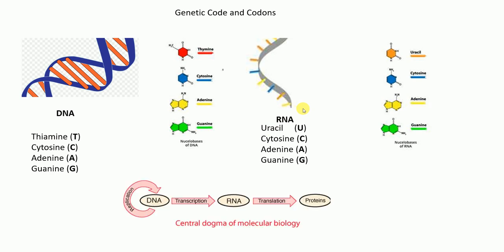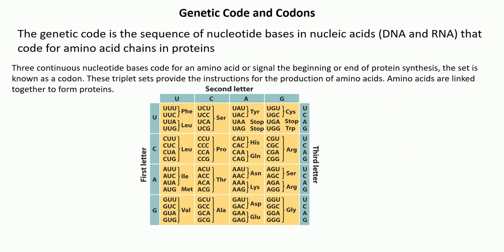I also want to give you a brief idea of the central dogma of molecular biology. In the central dogma, DNA makes RNA — that process is called transcription — and RNA makes proteins, which is called translation. This is how the flow of genetic information occurs.